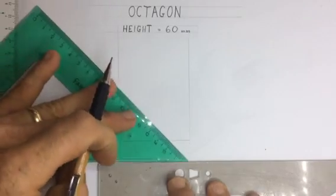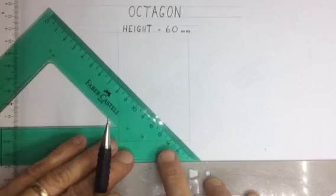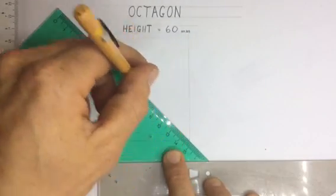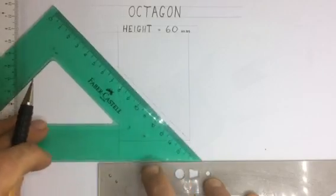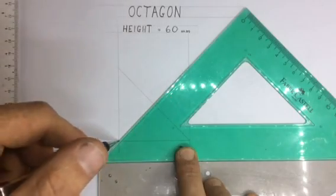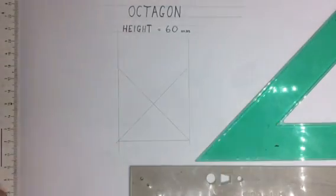And I'll take my 45 degree set square over here, slide that across, and I'm able to draw a 45 degree line going up there and a 45 degree line going up there. And that will give me equal length sides, which I'm just going to show you with this pair of dividers.